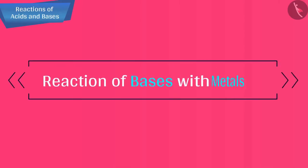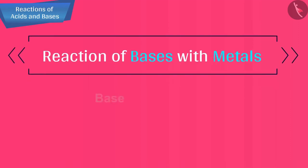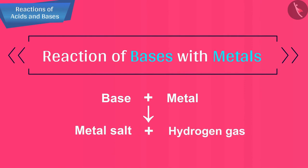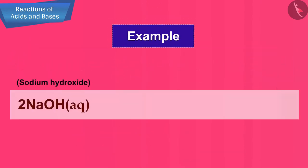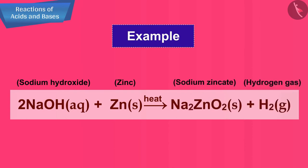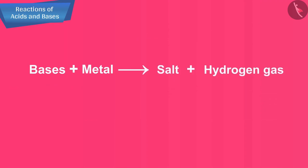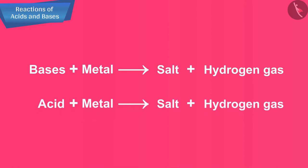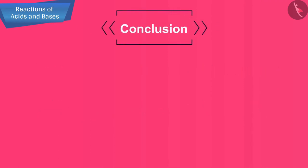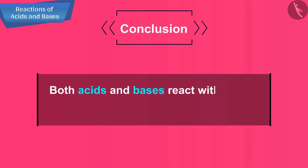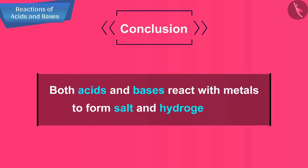Let's now talk about the reaction of bases with metals. When a base reacts with a metal, a metal salt and hydrogen gas are formed. For example, when sodium hydroxide solution is heated with zinc, sodium zincate and hydrogen gas are formed. We can conclude that both acids and bases react with metals to form salt and hydrogen gas.